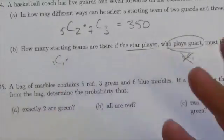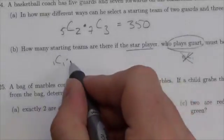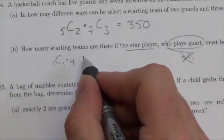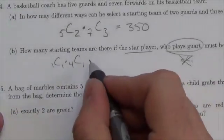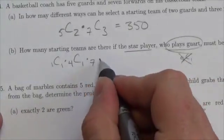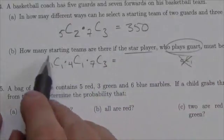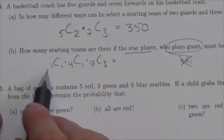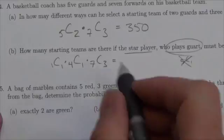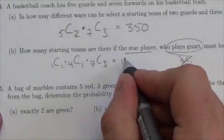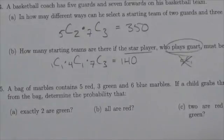Once that star player is removed from the pool, there are four guards left and I still need to choose one more, because I need two guards total. I also still need to choose three forwards from the group of seven. So: one choose one for the star player, times four choose one for the remaining guard, times seven choose three for the forwards — giving us 140 different teams.